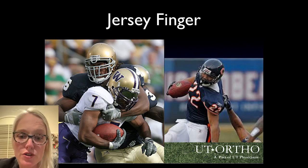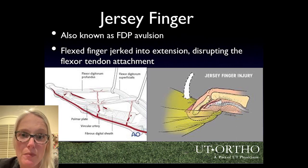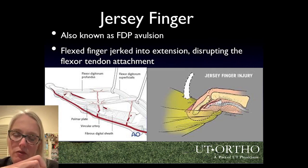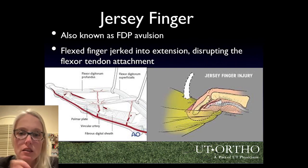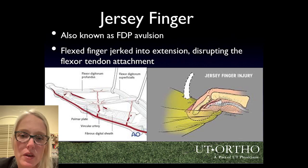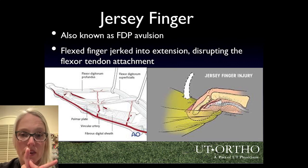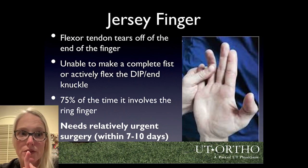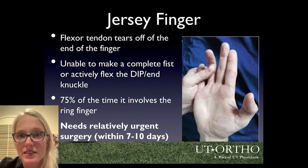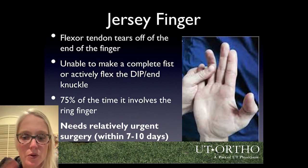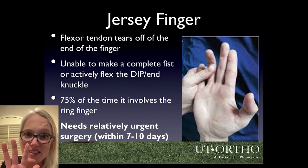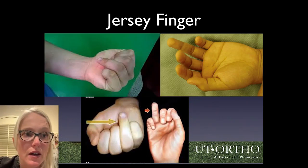Another fairly common sports-related tendon injury on the flexor tendon side is jersey finger, also called an FDP avulsion injury. It happens when a finger is hooked into a jersey and a flexion force gets jerked into extension, popping the long flexor tendon — the FDP — off the end of the bone. When that happens, it's no longer possible to bend the end knuckle. To test, hold the middle knuckle straight and ask the patient to actively bend the end knuckle — they won't be able to. It's most often the ring finger. These all need surgery, and need it quickly, because the tendon pulls back into the finger — sometimes all the way into the palm — and if it sits there too long it becomes non-repairable.